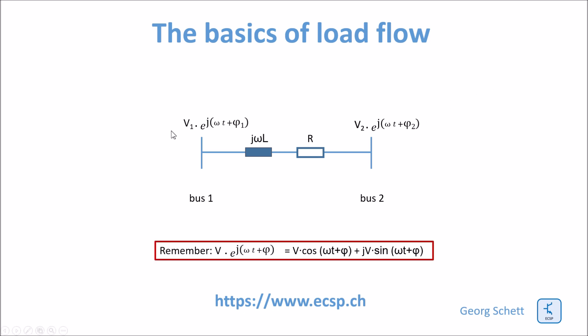Remember the math courses: this expression here is equal to this one and it has a real part and an imaginary part. The real part is cosine times this term here in brackets, and the imaginary part is this term here in brackets times sine.